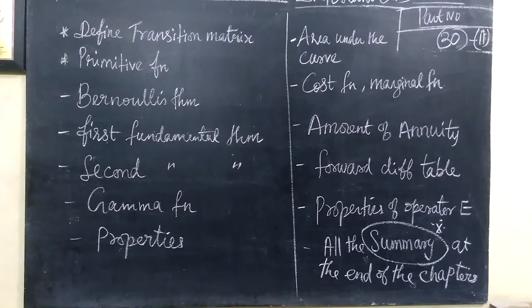Then Primitive Function, then Bernoulli's Theorem, First Fundamental Theorem, Second Fundamental Theorem, and the statement you are writing. So with the formula you are writing, then Gamma Function and the Gamma Function properties to be called.